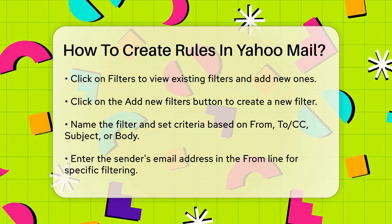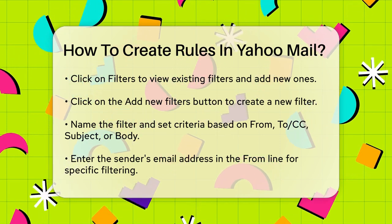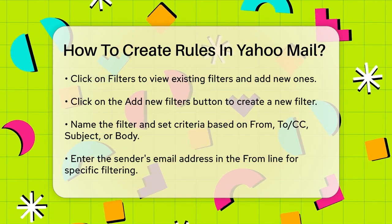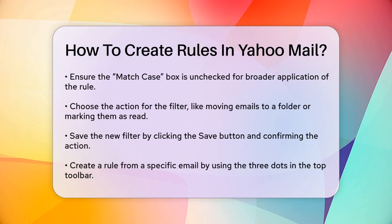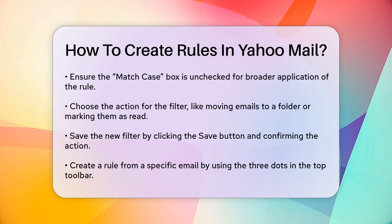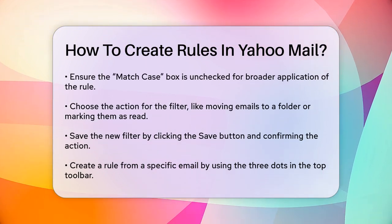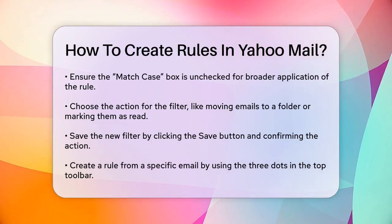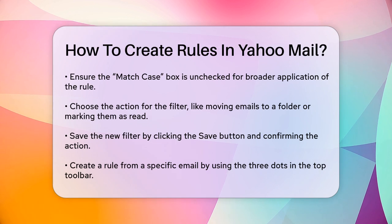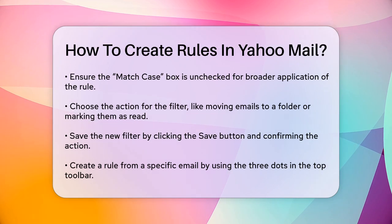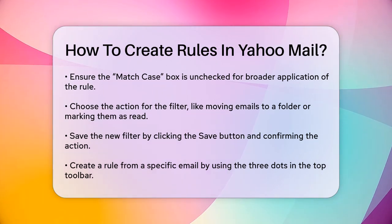After setting the criteria, choose the action you want the filter to perform. This could be moving the email to a specific folder, marking it as read, or even trashing it. Select the folder from the drop-down menu where you want the emails to go. To save your new filter, click on the Save button. Yahoo Mail will ask if you want to save the rule, so click Yes to confirm.